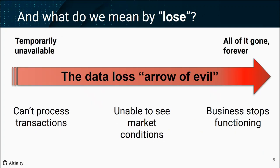Similarly, we want to define what we mean by the word 'lose.' In the context of data, lose is actually a spectrum — it's not a single thing. When we lose data, we can talk about losing it temporarily, so it can be just gone for a while but come back completely, all the way to a state where it is completely gone forever. I call this the data loss arrow of evil. The value of the loss may be more or less severe at different points in the spectrum, depending on what kind of data you have.